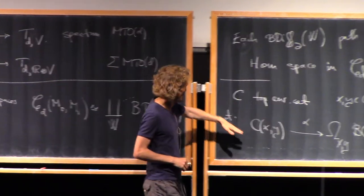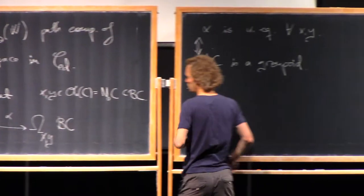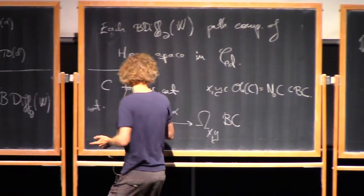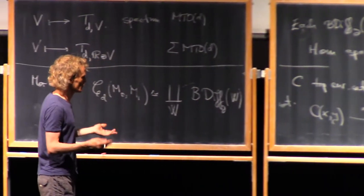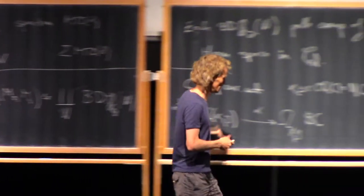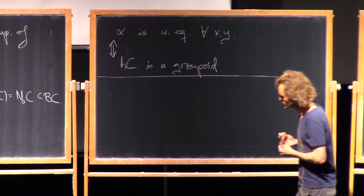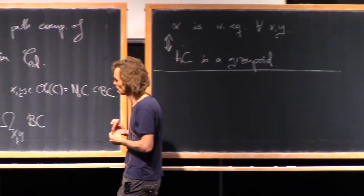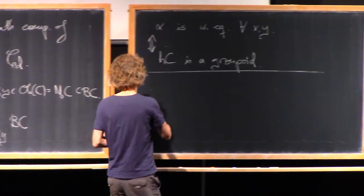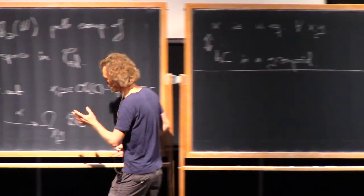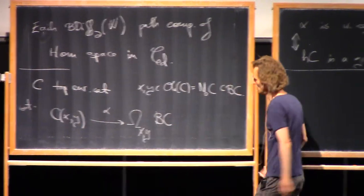So if this topological groupoid has this property, then we can up to homotopy reconstruct the morphism spaces from knowing the classifying space. If hc is not a groupoid, we shouldn't expect any particularly good relation. Okay, so otherwise it's kind of awkward to reconstruct anything about these spaces out of knowing the homotopy type of the classifying space.